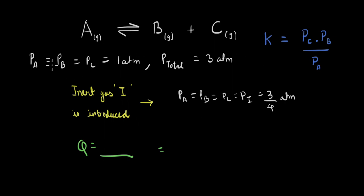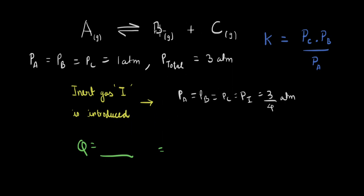The rest of the conditions are the same as before. We assume that the partial pressures of A, B, and C are 1 atm, so the total pressure is 3 atm. When we introduce an inert gas at equilibrium, because the total pressure is fixed and we are adding a new gas, the partial pressure of each of these should reduce. The sum of all partial pressures of A, B, C, and the inert gas should equal 3 atm. We assume all partial pressures are equal to 3/4 atm — you can check that 4 times 3/4 gives 3 atm. The reaction quotient is the partial pressure of C times the partial pressure of B divided by the partial pressure of A, which gives (3/4 × 3/4) / (3/4).